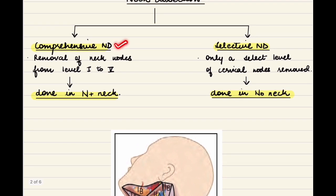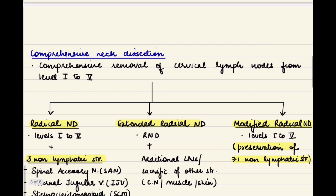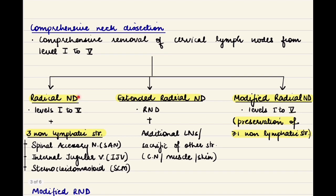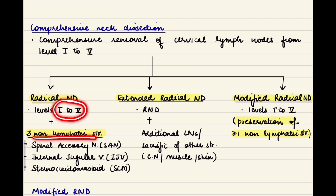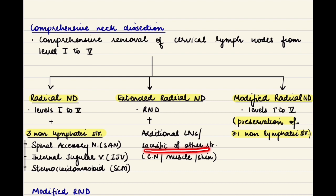Comprehensive neck dissection removes levels 1 to 5. It is divided into radical neck dissection, extended radical neck dissection, and modified radical neck dissection. Radical neck dissection means removal of levels 1 to 5 along with three non-lymphatic structures: the spinal accessory nerve, internal jugular vein, and sternocleidomastoid muscle. Extended radical neck dissection means that in addition to radical neck dissection, some additional lymph nodes or other structures — such as other cranial nerves, muscles, or skin — are also removed.